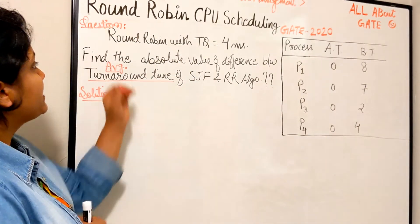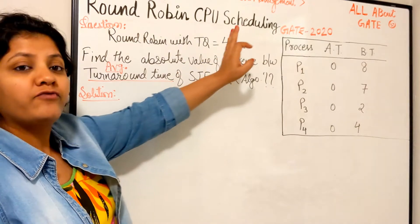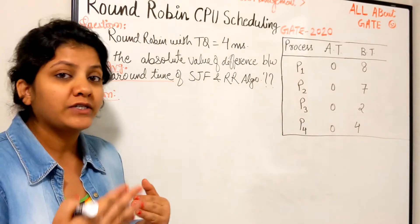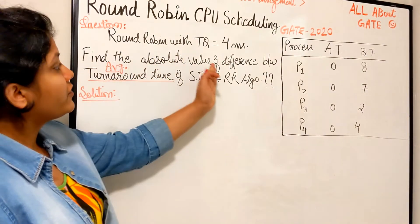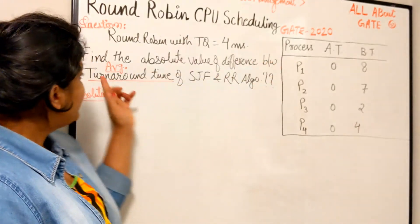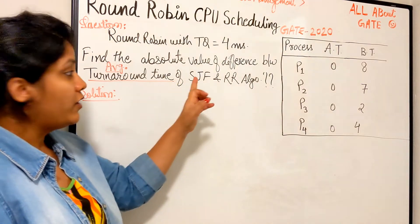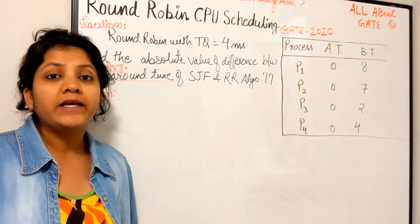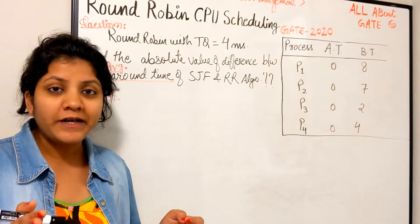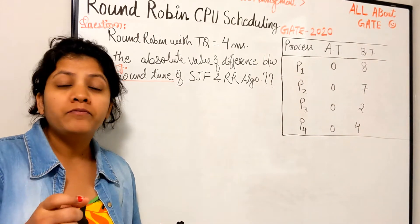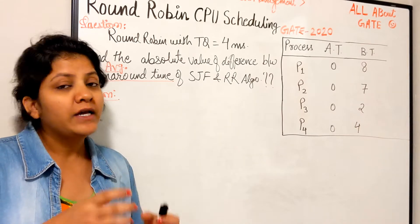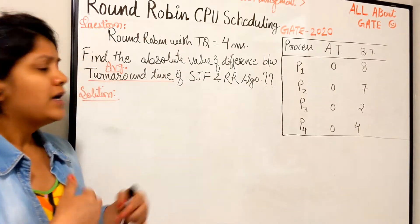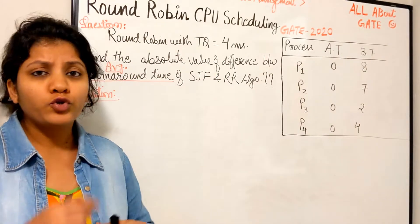The question says if you use Round Robin with time quantum 4 milliseconds and if you use Shortest Job First algorithm, find the absolute value of difference between the average turnaround time of SJF and Round Robin. You implement both algorithms separately, find the turnaround time for each process, average for each algorithm, find the difference, and round up to two decimal places.